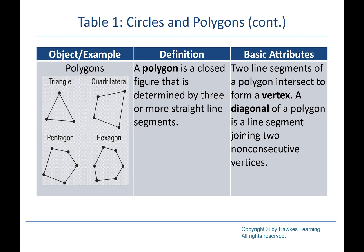You know the basics: triangle, four-sided is quadrilateral, five-sided is pentagon, six-sided is hexagon, seven-sided is heptagon (septagon also works), eight is octagon, nine is nonagon, ten is decagon. Beyond a certain point we stop giving them special names and just call them n-gons, where n is the number of sides — so an 18-sided shape is just an 18-gon.